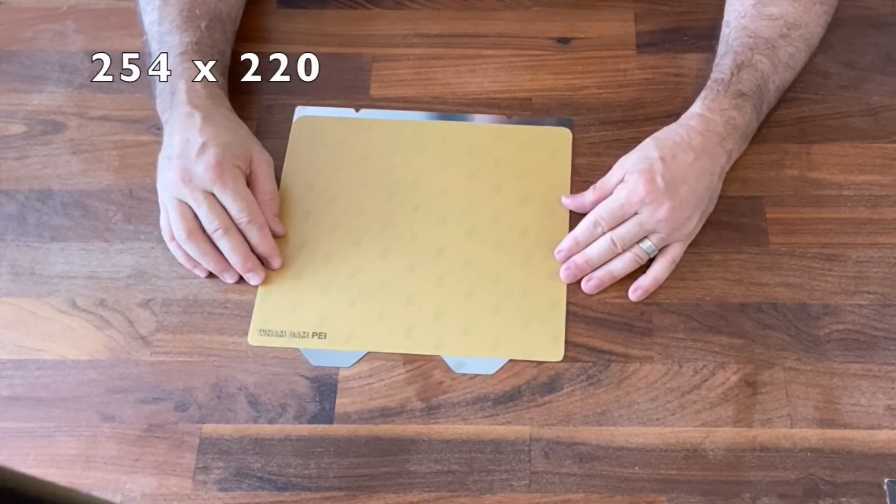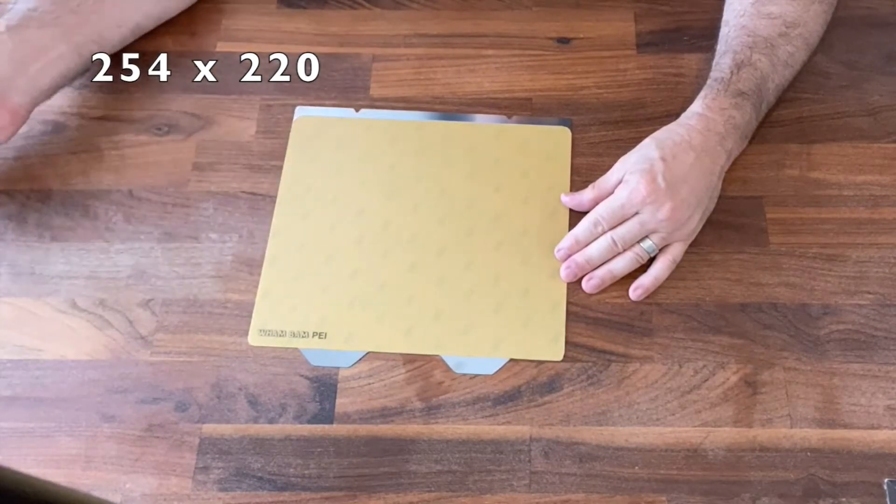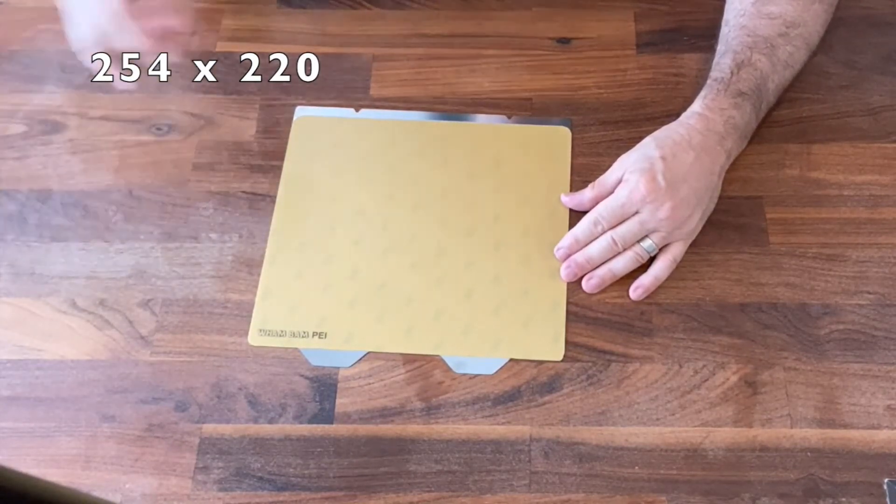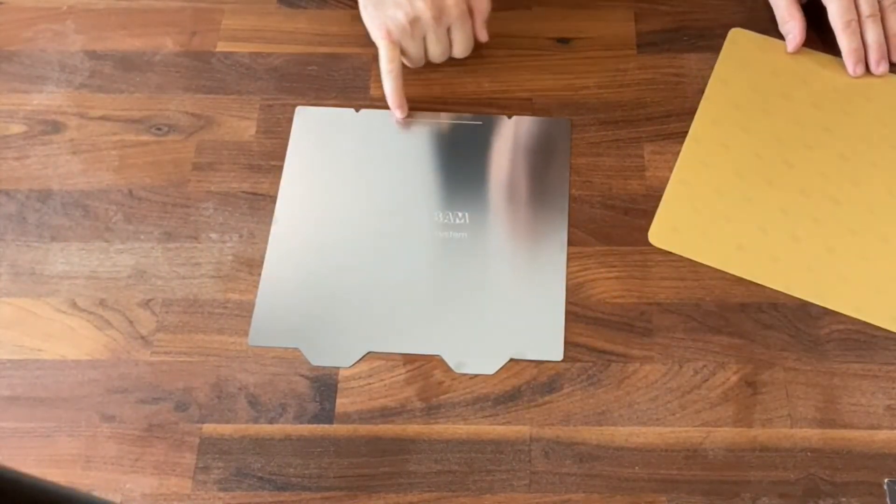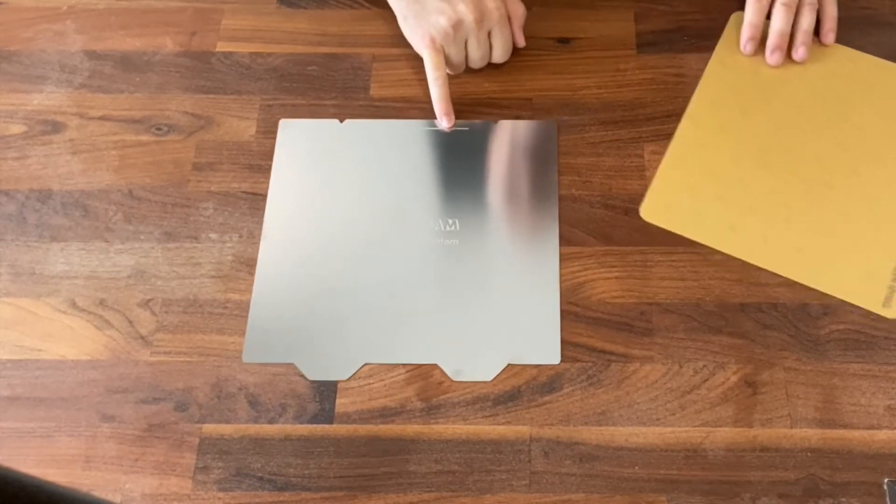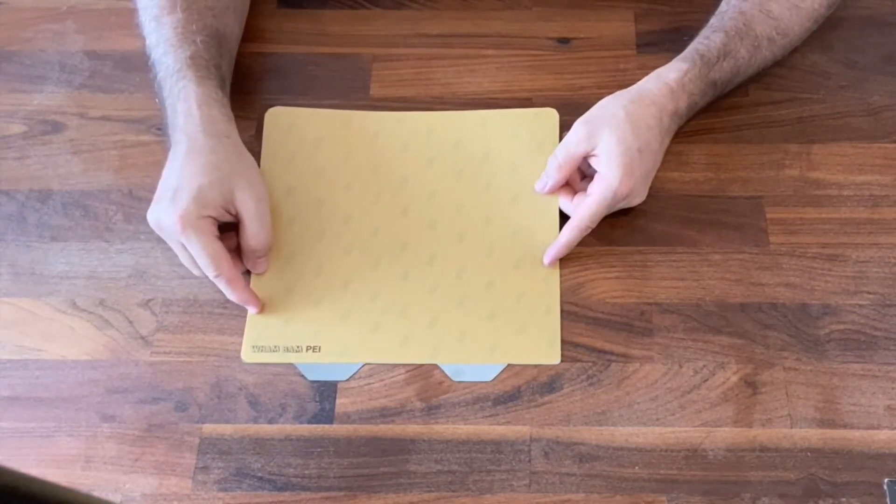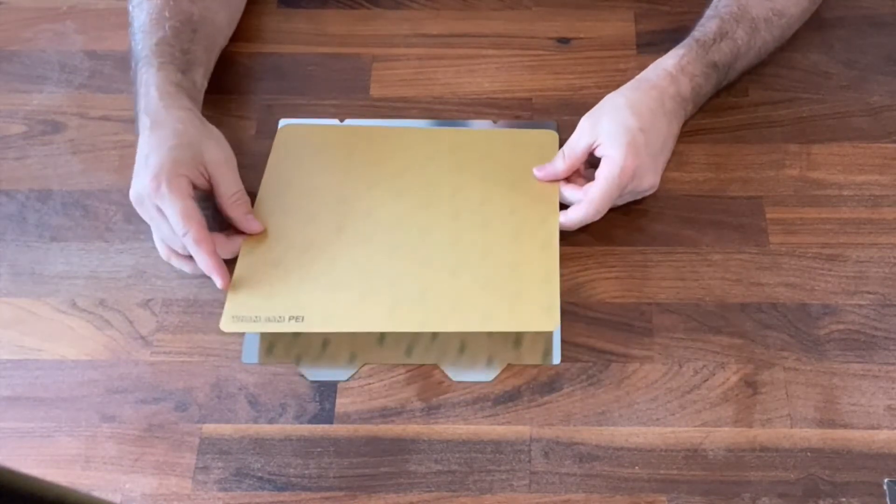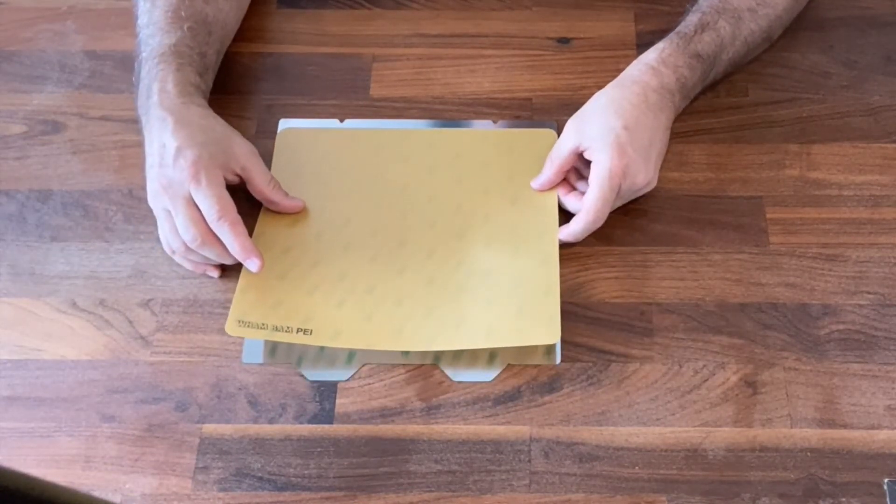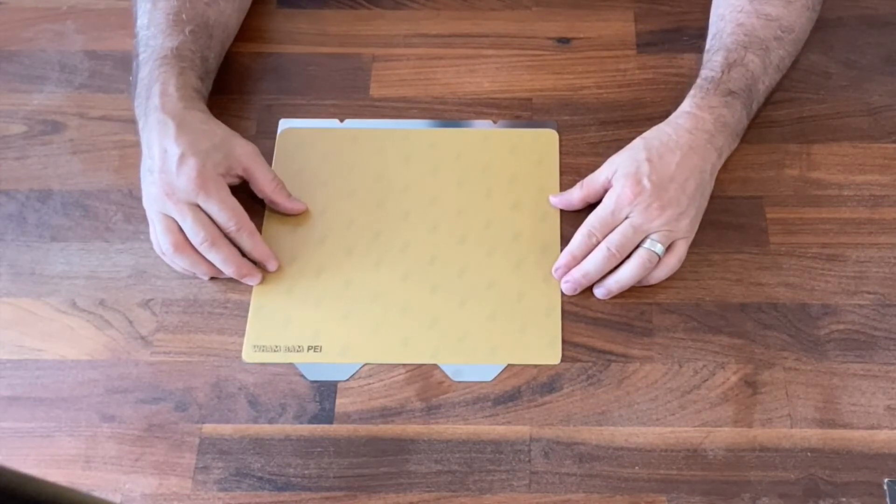This doesn't interfere with the tabs, and within the print volume of the Prusa's there's actually a line etched in the rear that helps you for alignment. You could either start the alignment while you're applying to the front edge, or you can start the alignment to the rear edge. It doesn't matter.